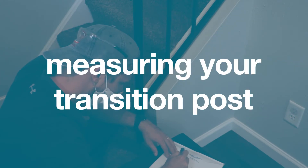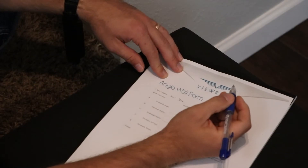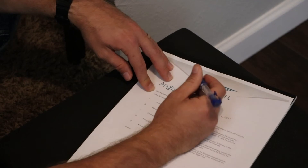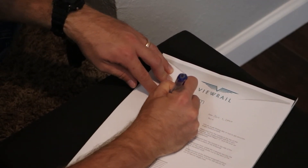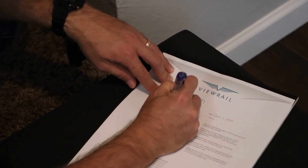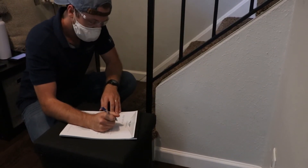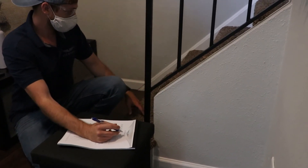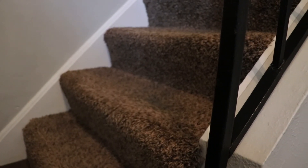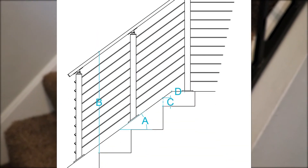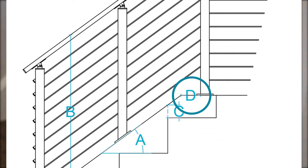Step 6: Measuring your transition post. In some cases, angle knee walls seamlessly transition to a level platform. This measurement is only necessary if you are mounting a post on a level surface at the top of the stairs. If not applicable, please enter 0 and proceed to the next step. However, if there is a transition, measure from the transition point to the front face of the transition post. You will need to make sure you align this post with other posts you are installing if there is a left or right hand turn before measuring this distance.